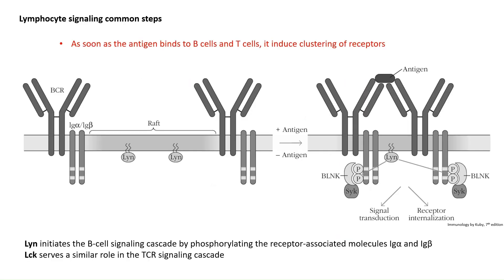The first step is that as soon as the antigen binds to a B cell or T cell, it induces clustering of receptors. For BCR, we have Ig alpha beta. This clustering occurs in the lipid raft region.